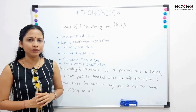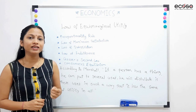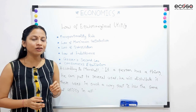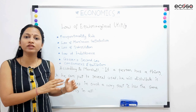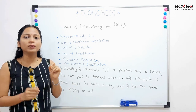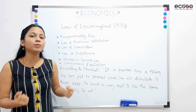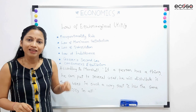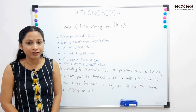Now, we will start with an example. Suppose, mere paas 2000 rupay hain, jis mein mujhe ek watch aur ek dress kharidni hai. Mera budget limited hai — sirf 2000 rupay. Do chizein purchase karni hai. Toh main 2000 rupay, dono ke liye aise distribute karungi ki dono ke purchase se mujhe maximum satisfaction mile. Yehi bola gaya hai Law of Equimarginal Utility mein.